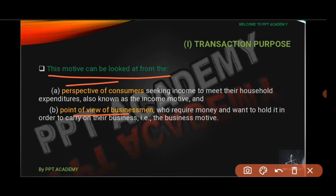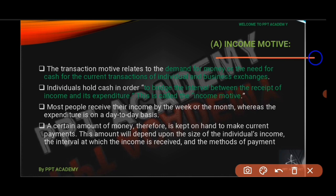From the consumer perspective, consumers seek income to meet their household expenditures, also known as the income motive. From the business management perspective, businessmen require money and want to hold it in order to carry on their businesses. The transaction motive relates to the demand for money — the need for cash for current transactions of individuals and businesses.